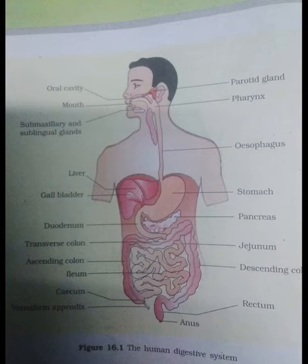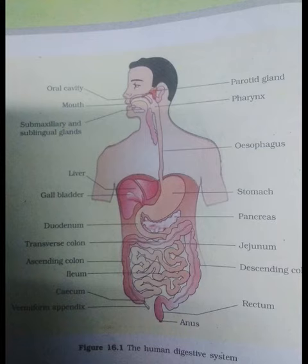The undigested food and feces enter into the caecum of the large intestine through the ileocaecal valve, which prevents the backflow of fecal matter. Most of the water is absorbed in the large intestine. The undigested food becomes semi-solid in nature and then enters into the rectum and anal canal, and is finally expelled out through the anus.